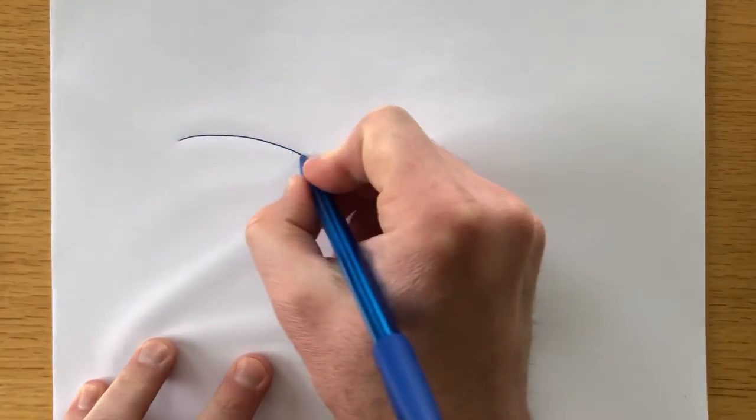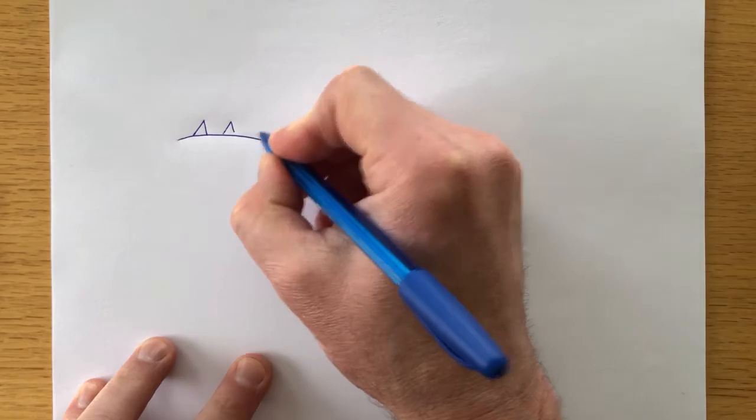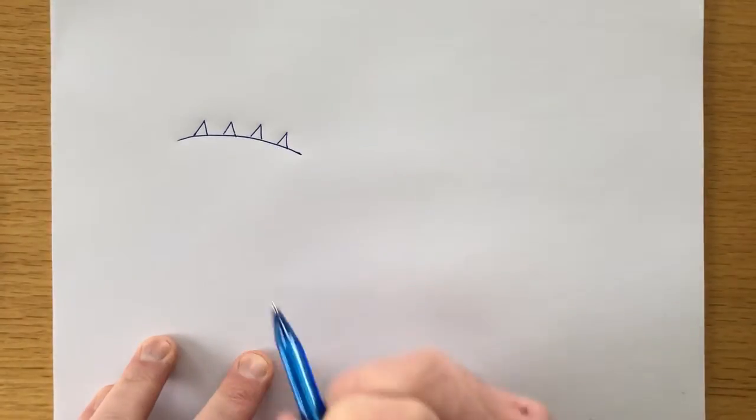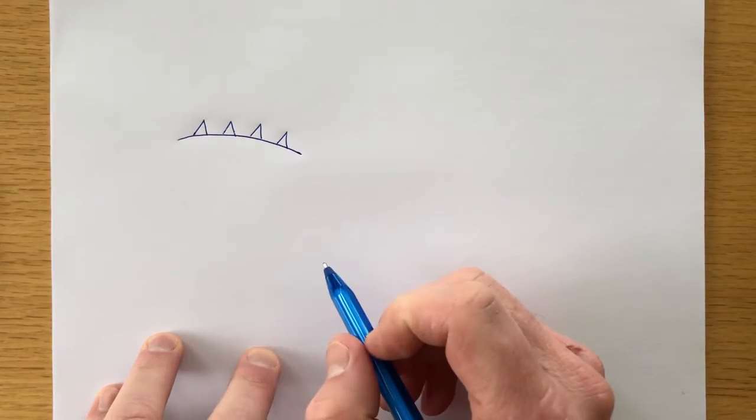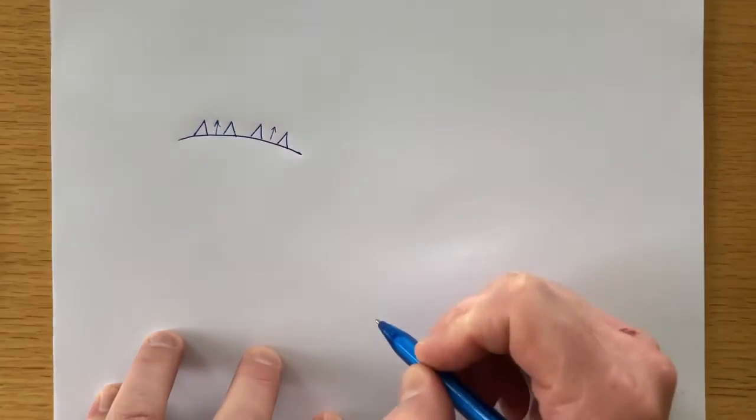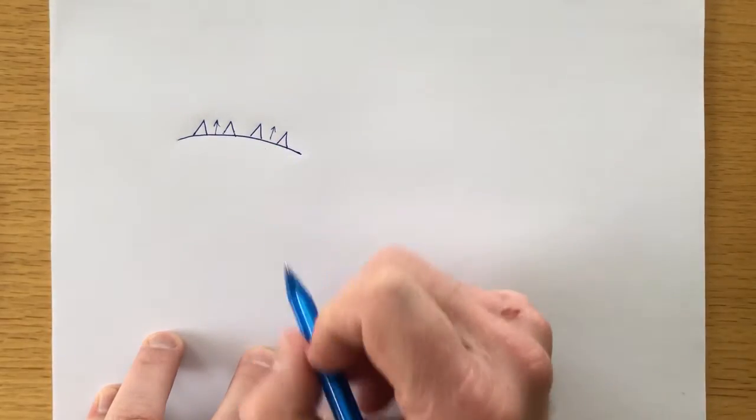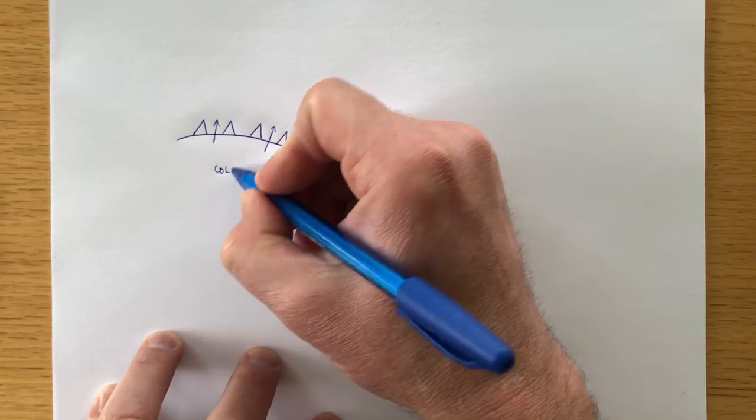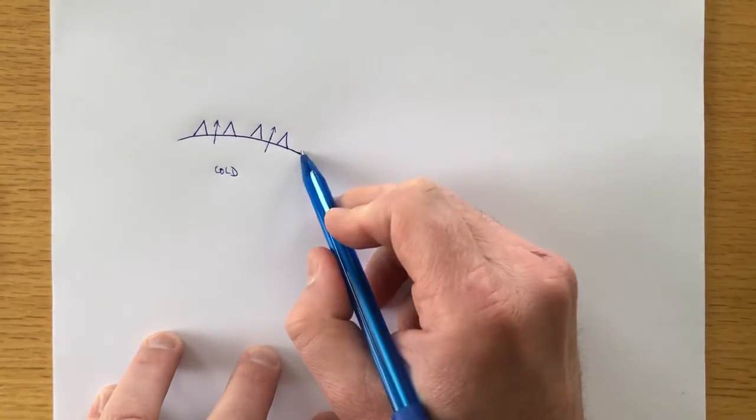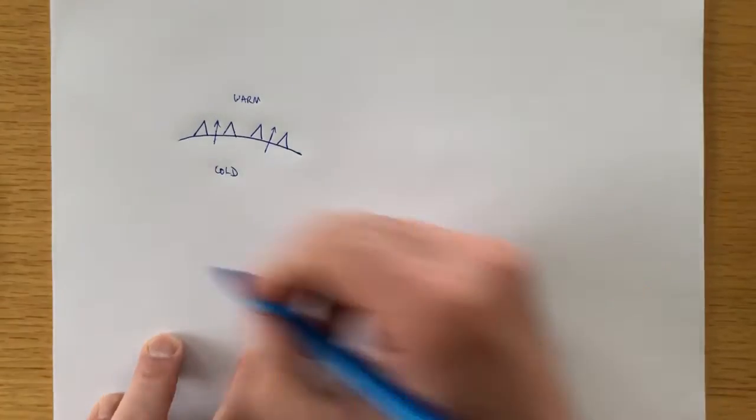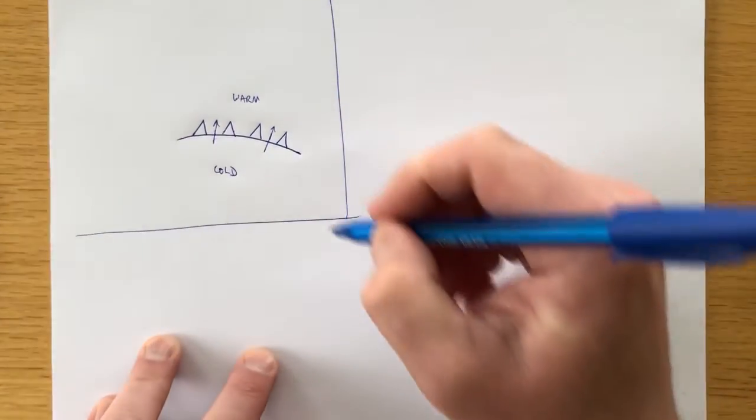The first one is a cold front. You can tell it's a cold front because it's blue and because it has triangles on it. Those triangles will show you not only that it's a cold front, but it's headed that direction. Whatever side the symbols are on, that's the way it's moving. So what that tells me is the air behind it is cold, and that's the front of the cold air. That means the air up here must be warm. That's a cold front.